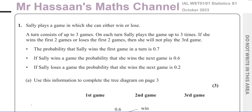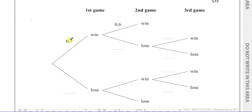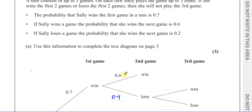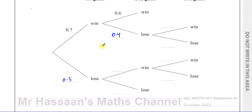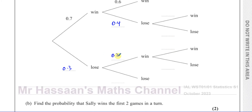The question asks us to complete the probability tree diagram. The ones already given are 0.6, 0.7, 0.3, 0.6, and 0.4. If she loses a game, the probability she wins the next is 0.2, so that branch is 0.2 and the other is 0.8, since they add up to 1. If she wins two games she stops, so that branch ends there.